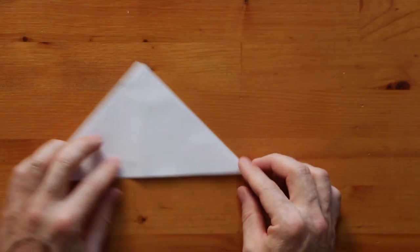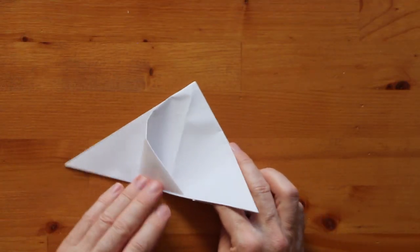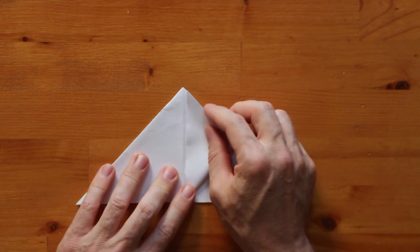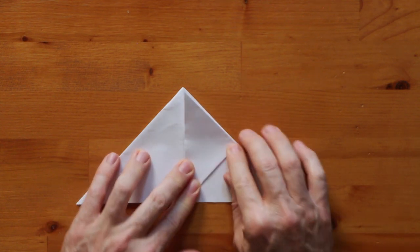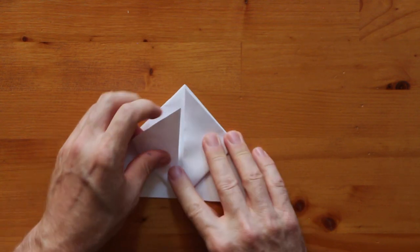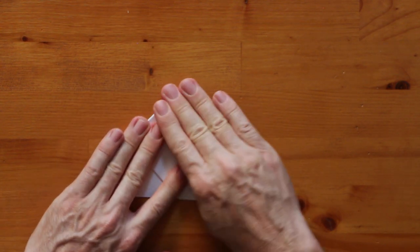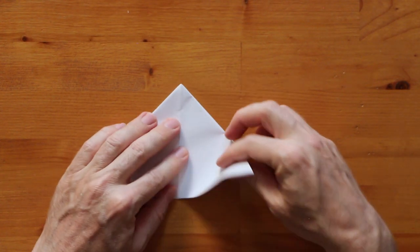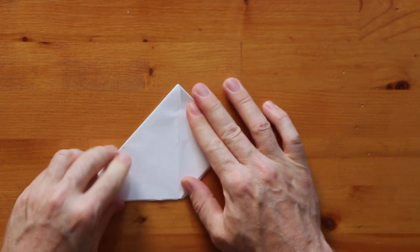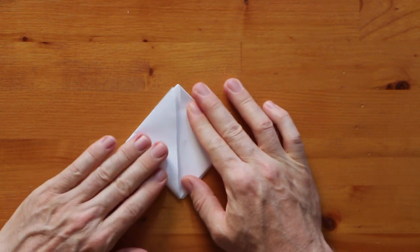Alright, so we've got four flaps: two on this side, two on this side. You're going to fold each one of those four flaps up to the top just like this. One, two, and then flip it over, three, four.